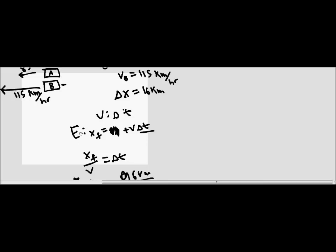The whole point of this problem is to show you how you can take multiple equations and relate them, even if they're for different objects. Part B of this problem is really showing us this, because it's asking us how far the cars have to travel for the faster car to arrive 15 minutes before the slower car.